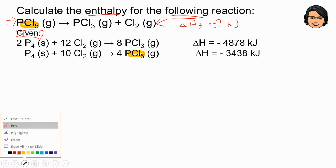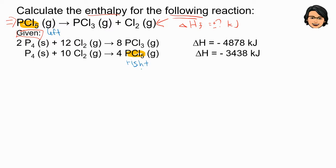But you can see PCL5 is on the left. The given one is on the right. So what do I need to do in order to get it on the left? I need to reverse it. So what I do is put 4 PCL5, reverse it, becomes P4 plus 10 Cl2. Since I have reversed from right to left, the sign negative, I need to make it become positive. So it's positive 3438 kilojoules.